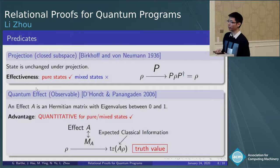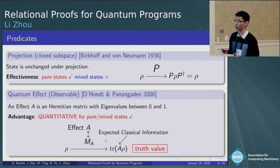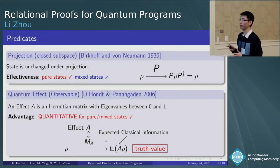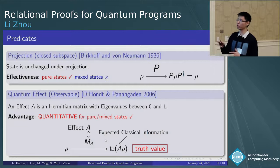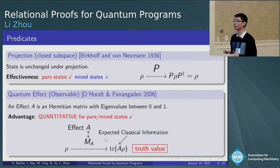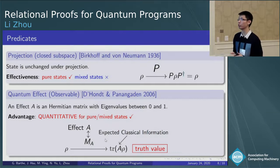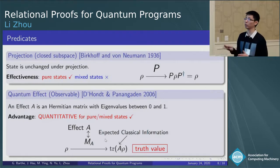For an effect A, there exists a corresponding measurement MA, and for some quantum state rho, if we perform MA, then the expected classical information we can obtain is trace A rho. Therefore, we may regard the expectation trace A rho as the truth value of rho with respect to the effect A. That is, the expectation trace A rho characterizes how the quantum state rho satisfies the effect A. Unlike the Boolean logic here, we need to regard it as a many-valued logic. The advantage of the effect is that it can be used to quantitatively reason about a quantum program, not only for pure state but also well for mixed state.